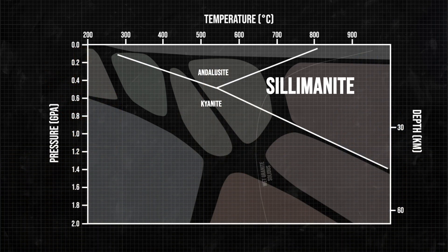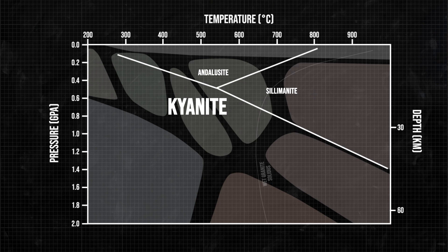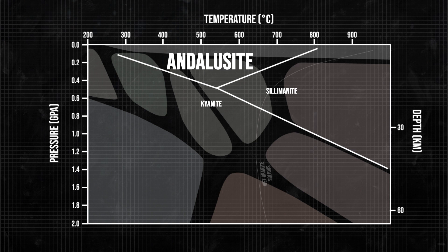Sillimanite is the high-temperature polymorph. Kyanite is the high-pressure polymorph. And andalusite forms at lower temperatures and pressures.